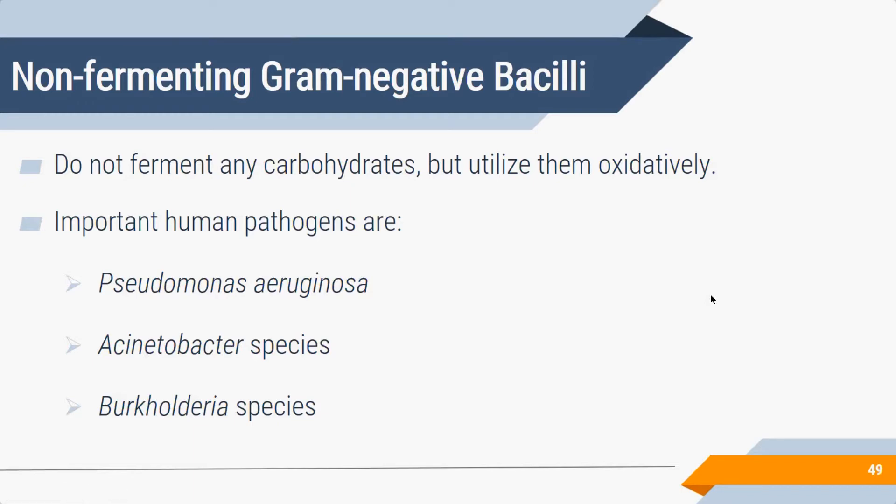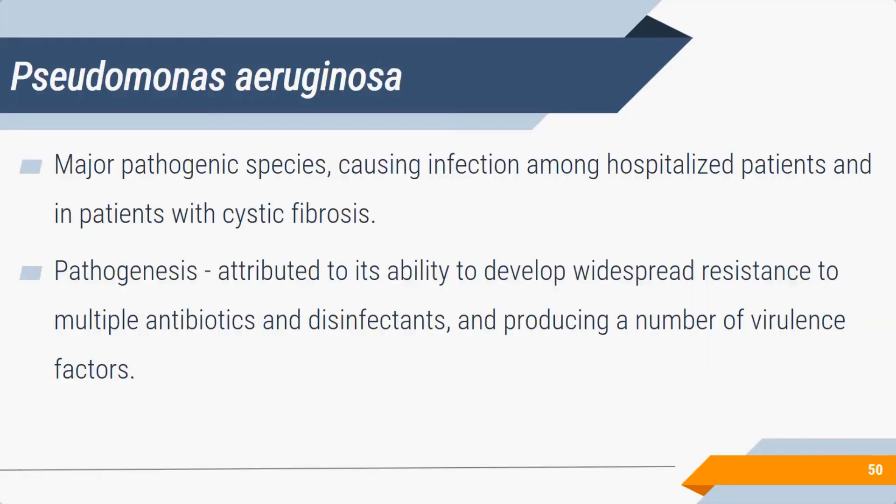Non-fermenting gram-negative bacilli do not ferment any carbohydrates. Glucose utilization can occur aerobically (oxidatively) or anaerobically (fermentation). Non-fermenters utilize carbohydrates only oxidatively. The important organisms in this group are Pseudomonas aeruginosa, Acinetobacter, and Burkholderia species.